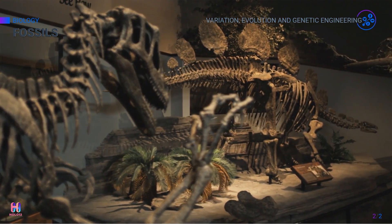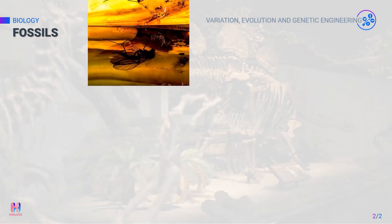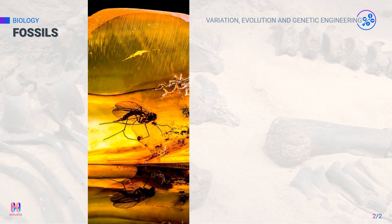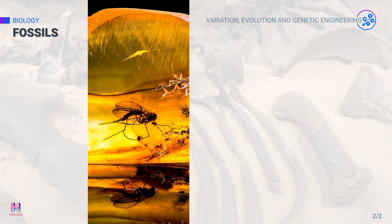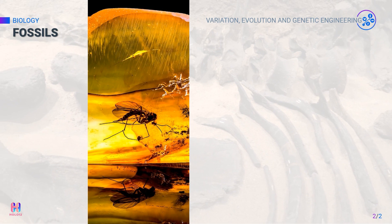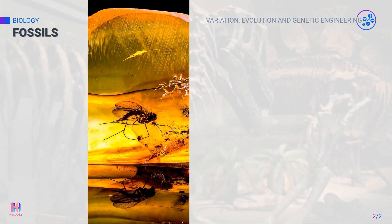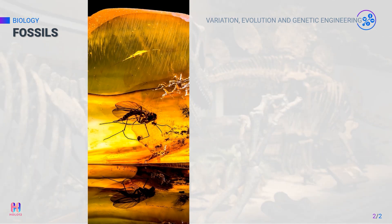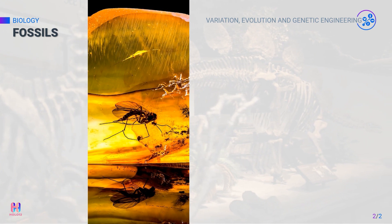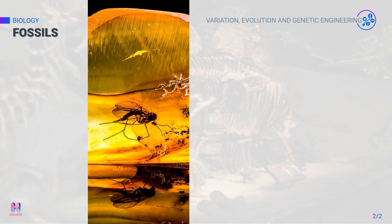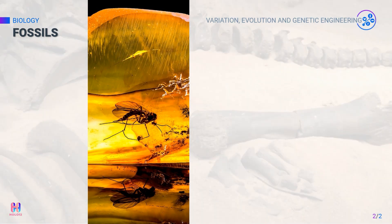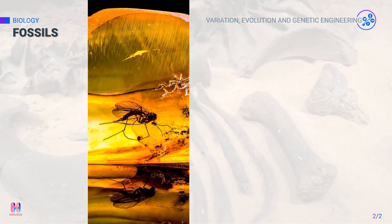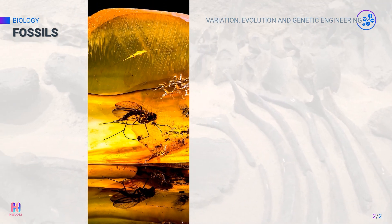Fossils can be formed in three different ways. In the first method, some parts of the organisms do not decay as the conditions needed for decay are not available. An example of this is amber — a fossilized tree resin in which an organism gets entrapped, where oxygen and moisture are not available. Take a look at this amber containing a trapped insect. This type of fossil formation is also seen in extremely cold environments where decomposers cannot survive, so dead organisms remain as fossils.